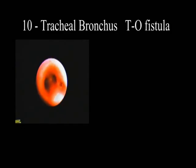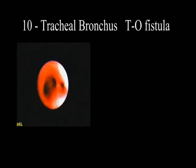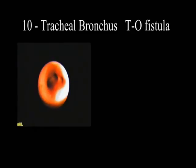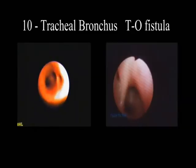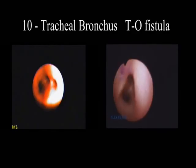Tracheal bronchus for the right upper lobe is an often associated anomaly, and tracheoesophageal fistula is also sometimes associated.